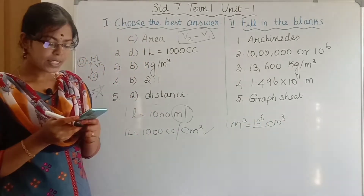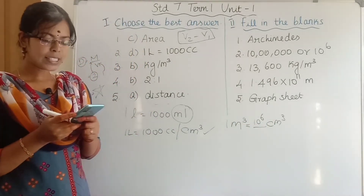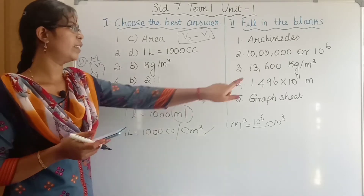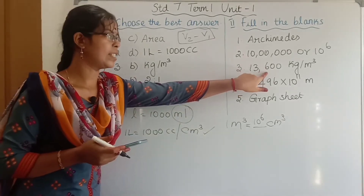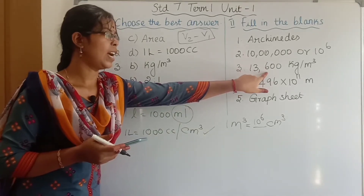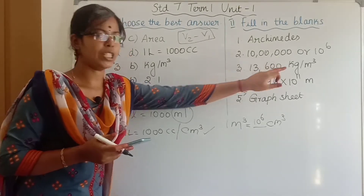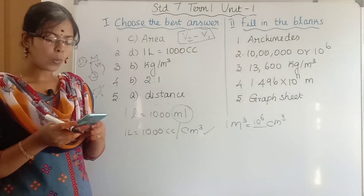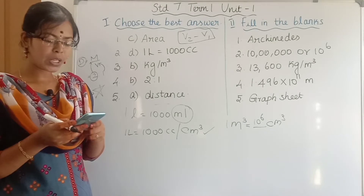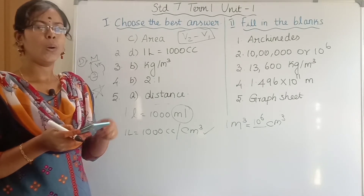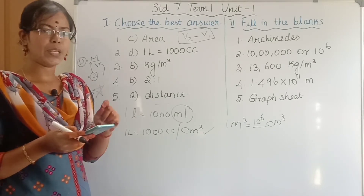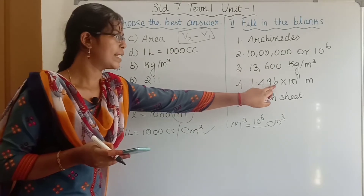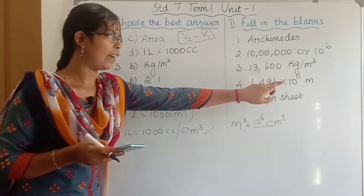Third question: the density of mercury is 13,600 kilogram per metre cube. Fourth question: one astronomical unit is equal to 1.496 × 10¹¹ metres.